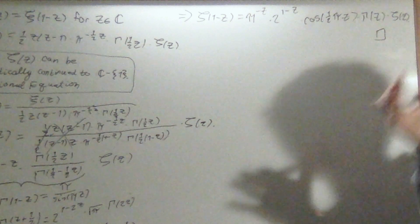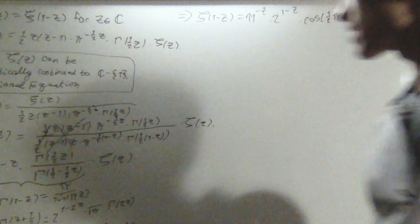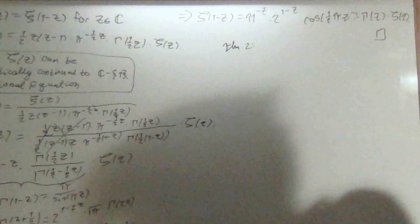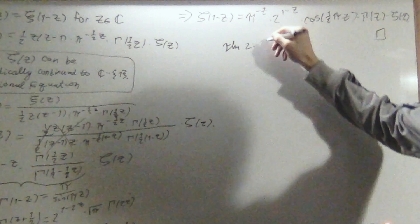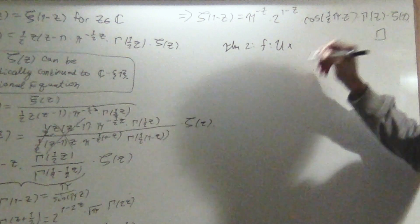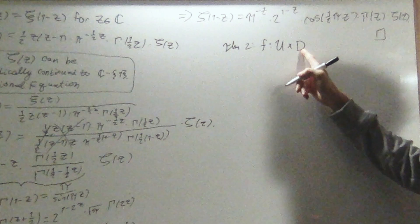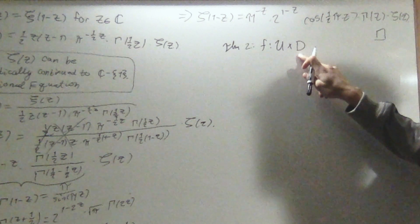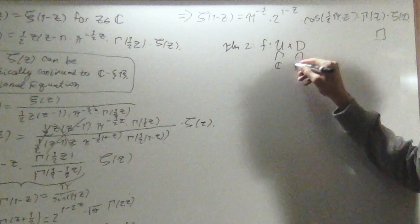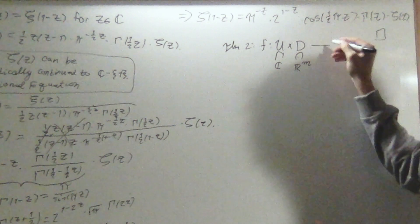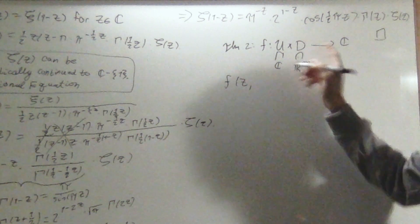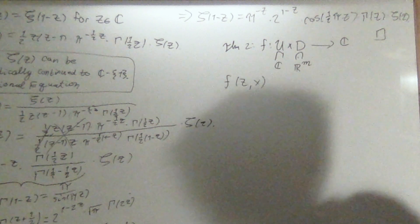Now I'm going to prove that the integral we had last time was analytic. I'll use a theorem — which I won't prove here but will prove in my complex analysis series. The theorem says: if we have a function f from U × D into ℂ, where U is an open subset of ℂ and D is a measurable subspace of ℝ^m, and f takes a complex variable z and a real variable x...